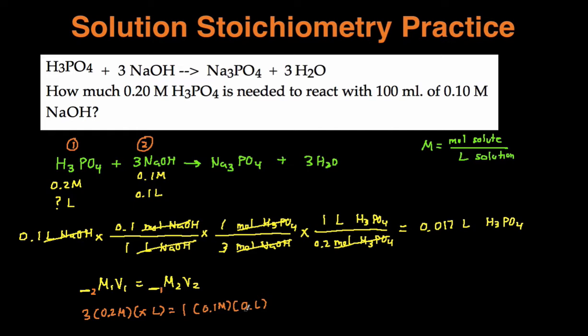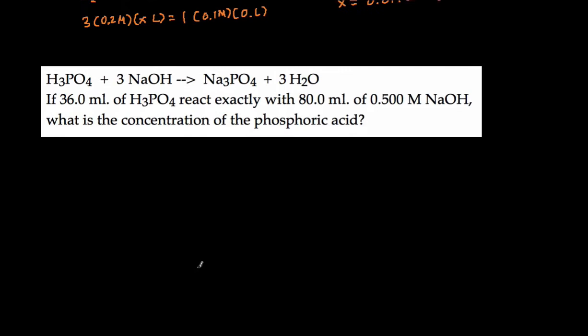And then the volume for 2 was 0.1 liters. And then you can do algebra and solve for x, and when you solve for x, you get x is going to equal 0.017 liters of 1, which is H3PO4. So look at that, we get the same answer in a lot less time. That's the shortcut, and we're going to try doing that one more time with another problem.